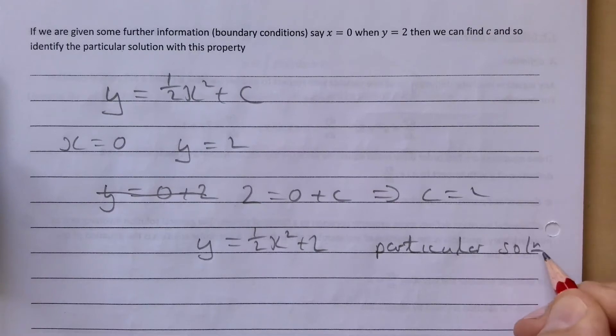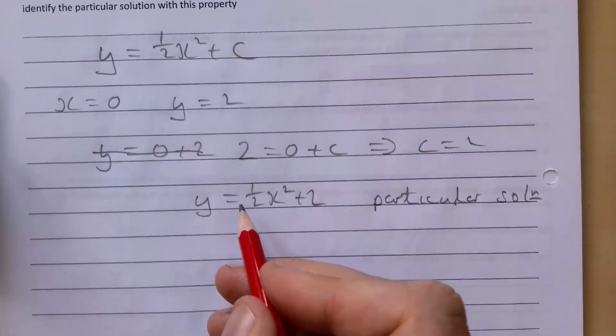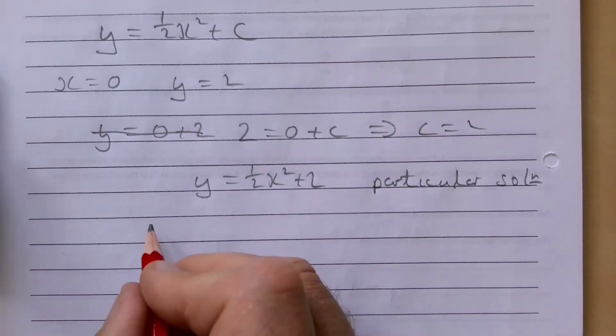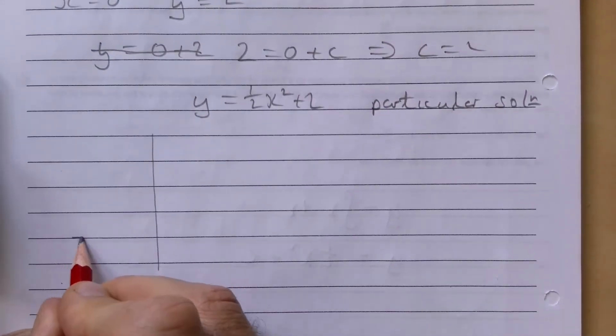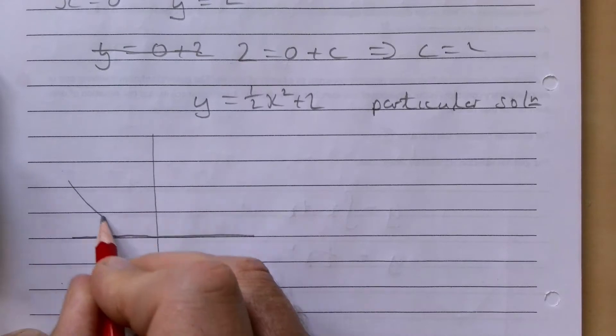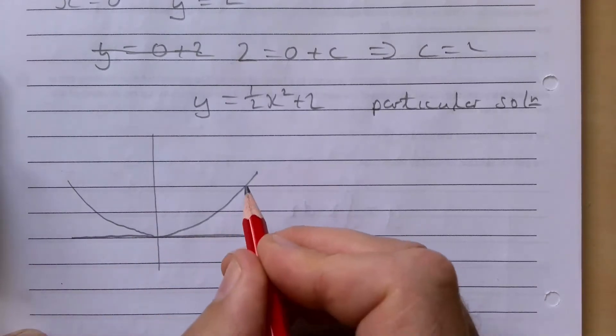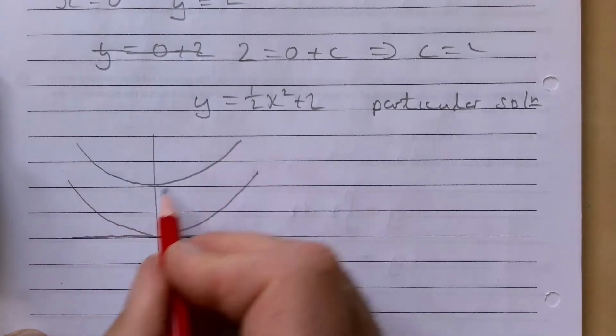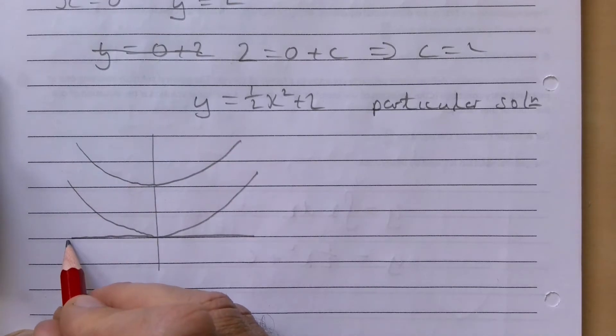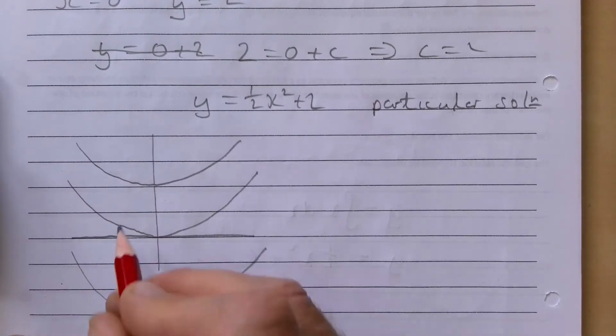It talks about a family of curves. If you think about the curve y = ½x², it would look something like this. If we have ½x² + 2, it looks like this. And ½x² - 3 would look like this.